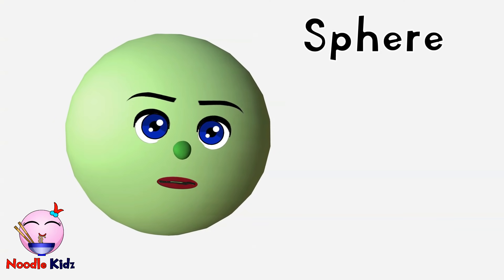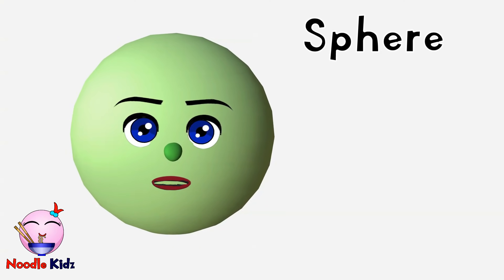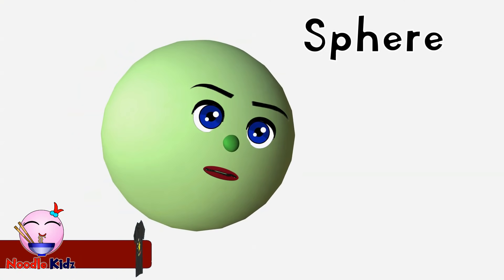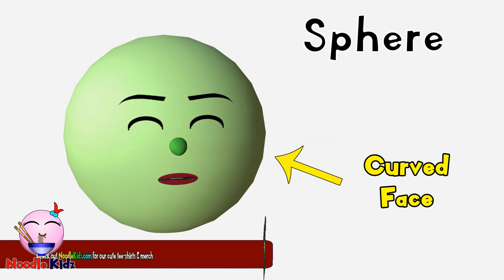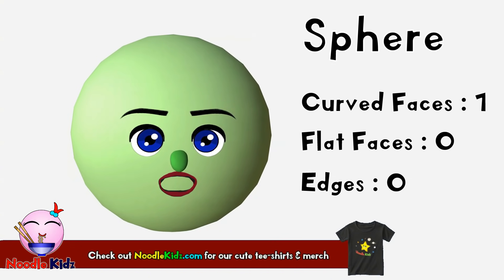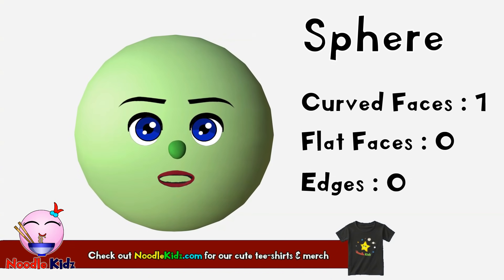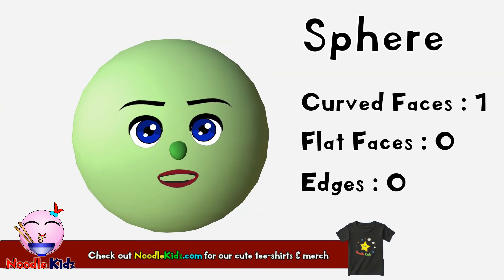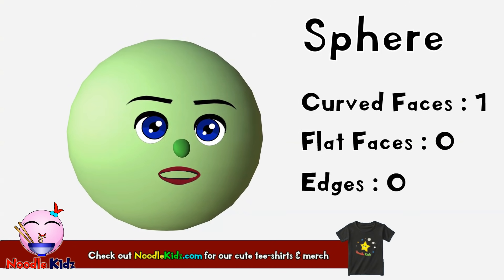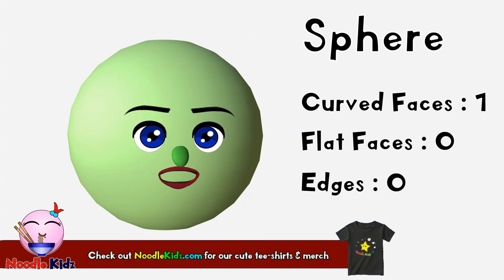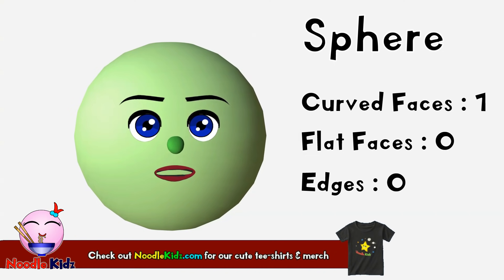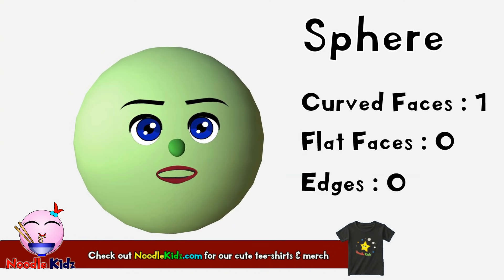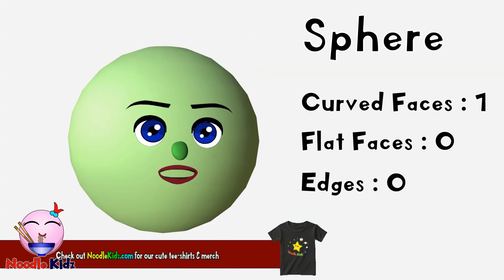I'm back. Let's count how many different flat surfaces I have. I have zero flat surfaces, which means I have no edges nor vertices. So, a sphere has one curved face, zero flat surfaces, zero edges, and zero vertices.